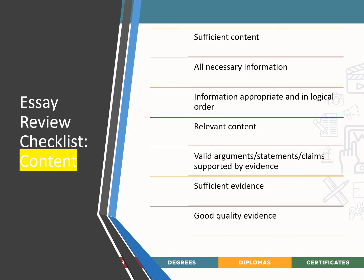In essay writing you have two checklists that you can use to check yourself. The first is checking your content — make sure that you have enough content, that you have all the necessary information, that your information is appropriate and follows in a logical manner, that it is relevant and necessary, that you have made valid arguments and statements, that you have provided evidence for claims you have made, and that you have sufficient, good quality evidence to support what you have written.